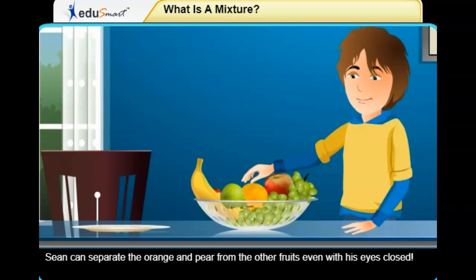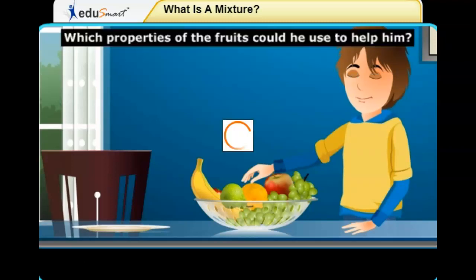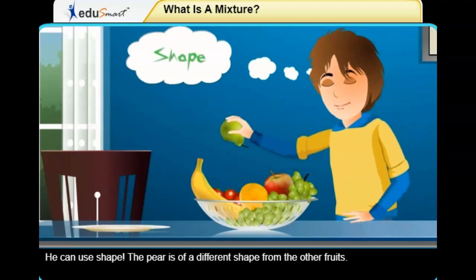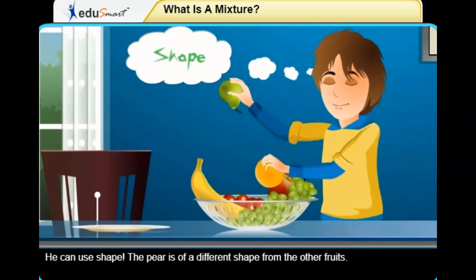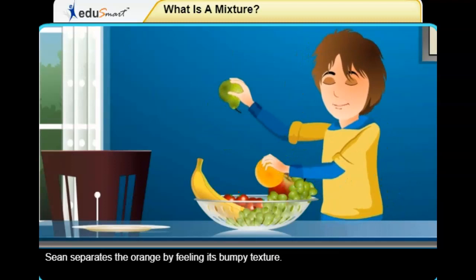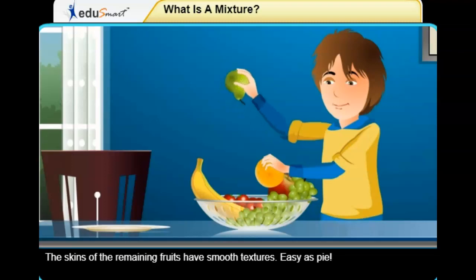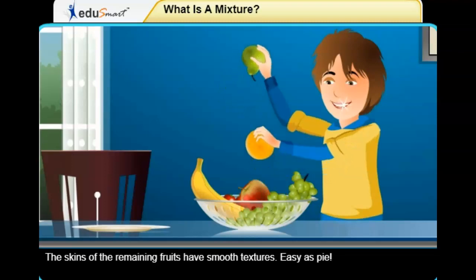Sean can separate the orange and pear from the other fruits even with his eyes closed. Which properties of the fruits could he use to help him? He can use shape — the pear is of a different shape from the other fruits. Sean separates the orange by feeling its bumpy texture. The skins of the remaining fruits have smooth textures. Easy as pie.